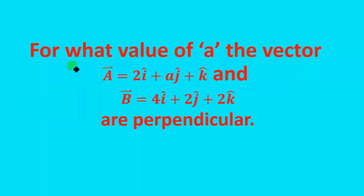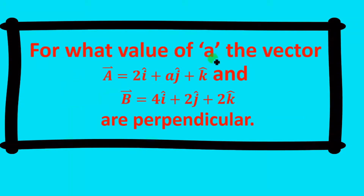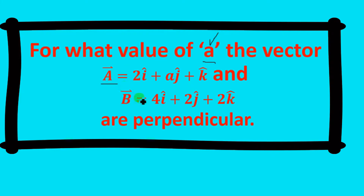The problem we are going to solve is: for what value of a are vector a = 2i + aj + k and vector b = 4i + 2j + 2k perpendicular to each other? We will determine the value of a for which these two vectors are perpendicular to each other.